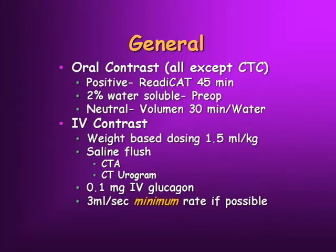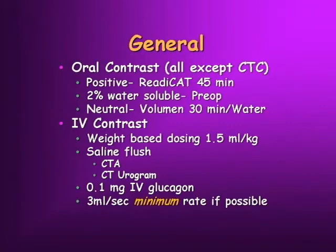The presentation that Mike referred to in his talk that we gave at the RSNA last year is going to be in the January Radiology. I like to use weight-based dosing for IV contrast: 300 milligrams of iodine per milliliter, 1.5 ml per kilogram, will generally give you an acceptable scan. We use saline flushes for all of our CTA work and CT urograms. I like glucagon — a tenth of a milligram doesn't cost a lot and still improves the scans, even with a 64-slice scanner.